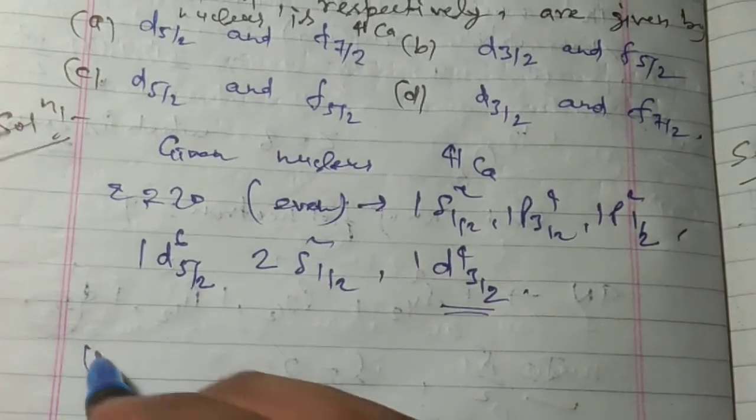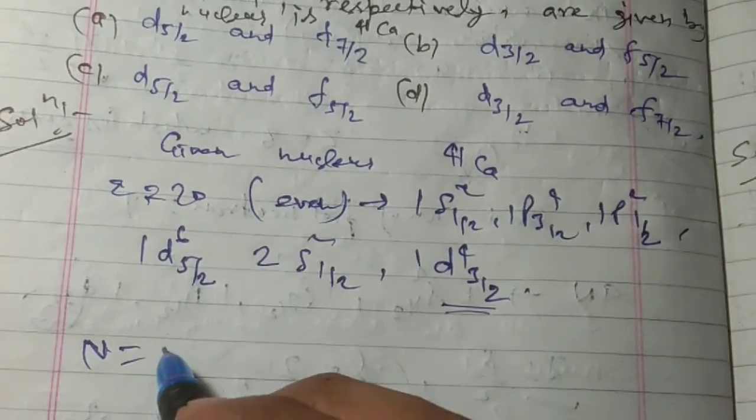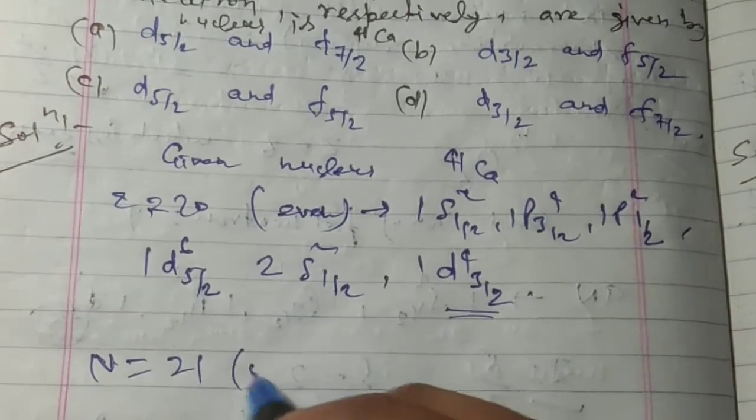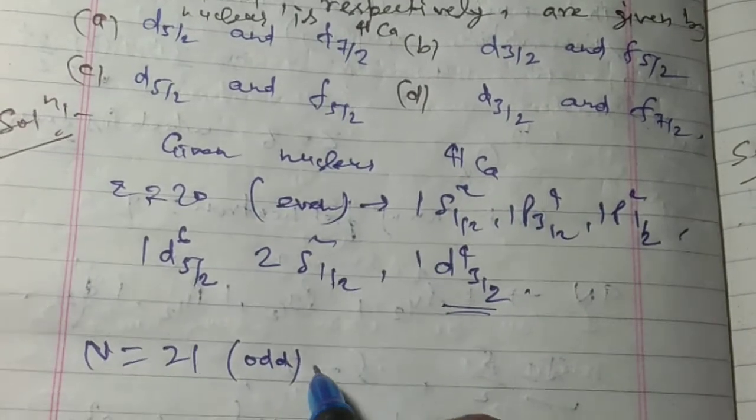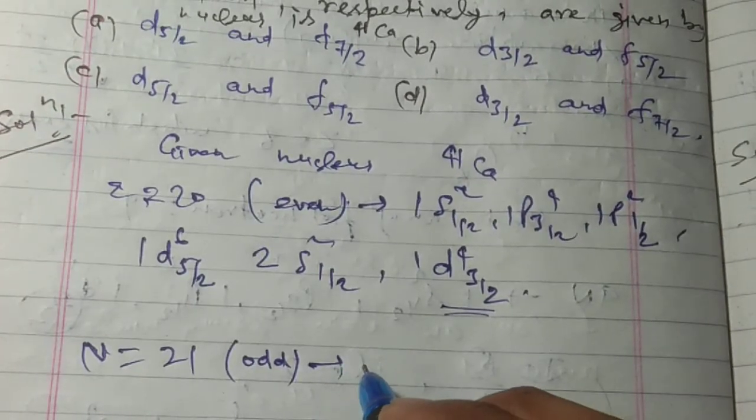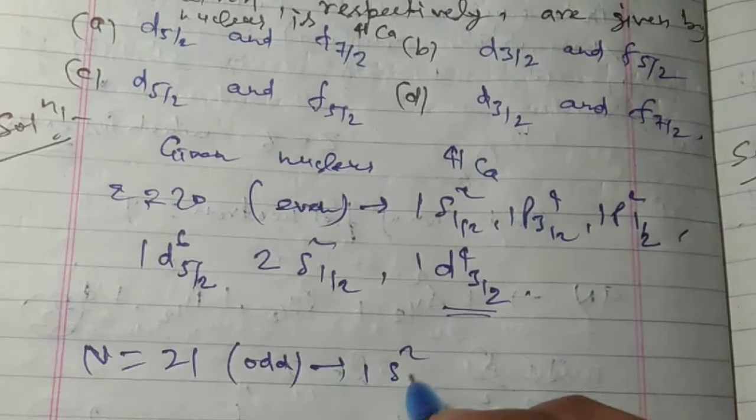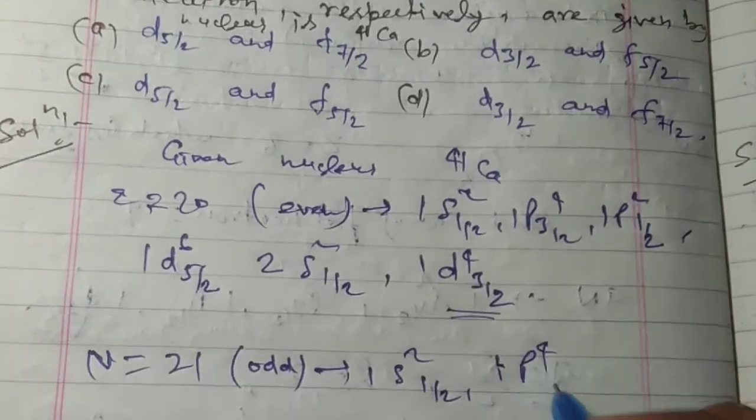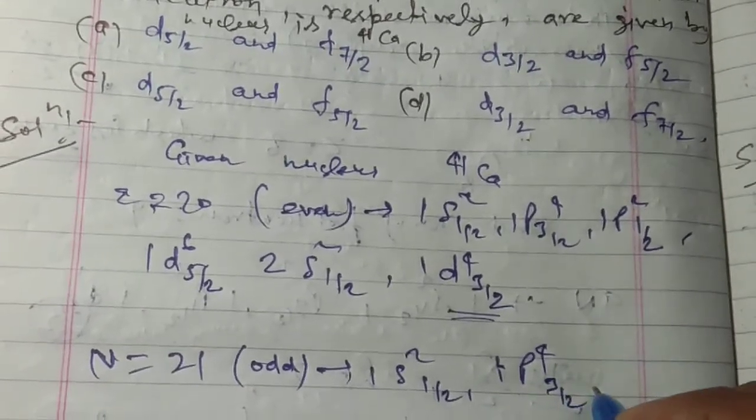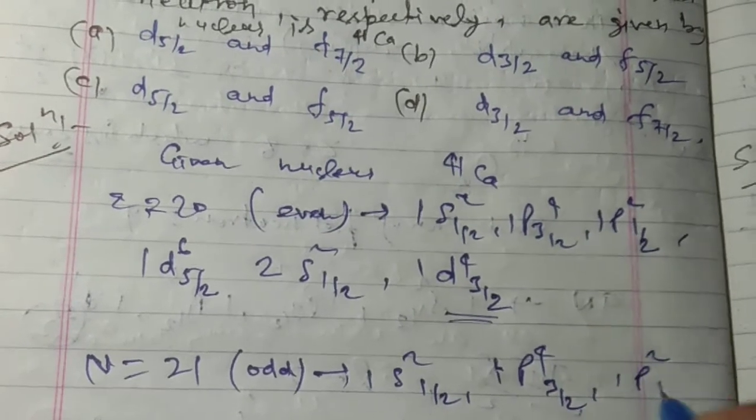So it must be option B or option D. Now here, the number of neutrons is 21, that is odd, and it will give...